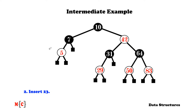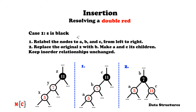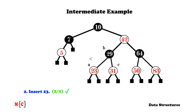Now let's do another exercise: we insert 23. The answer is to move to the left of 29, replace the external node with 23 — but then we have a double red, so we need recoloring. Note that the sibling of y is black, so we are in the case where s is black. We relabel the nodes to a, b, and c from left to right, then replace z with b and make a and c its children. We end up with a valid tree, and as you can see there won't be another double red, as promised by the algorithm.